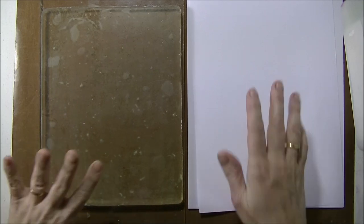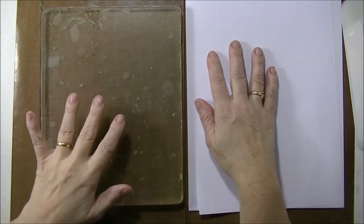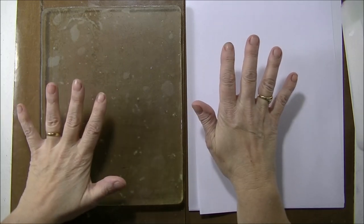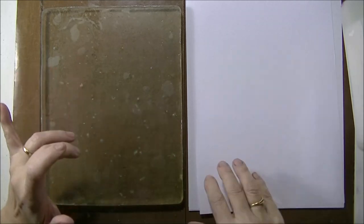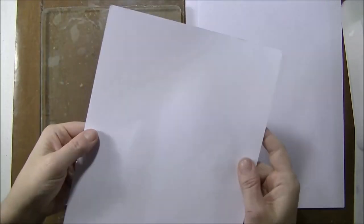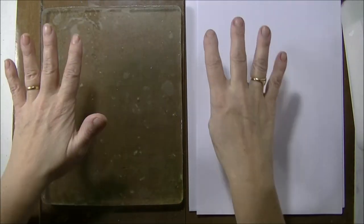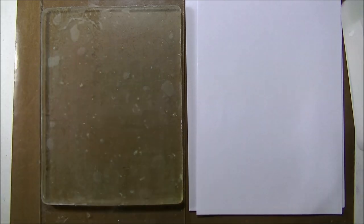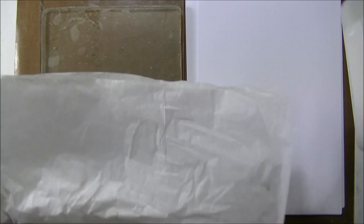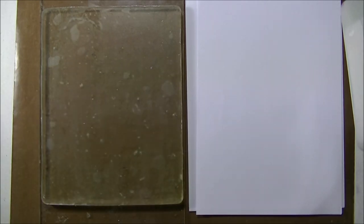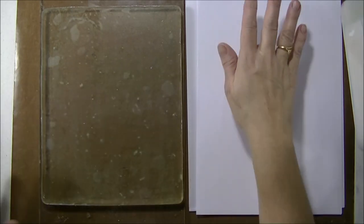So today we are going to prepare paper backgrounds that will be used in the second part to make collages. For that I'm going to use thin paper, machine paper. I can also use tissue paper, one or the other doesn't really matter, but for what I'm doing today I'm going to use machine paper.